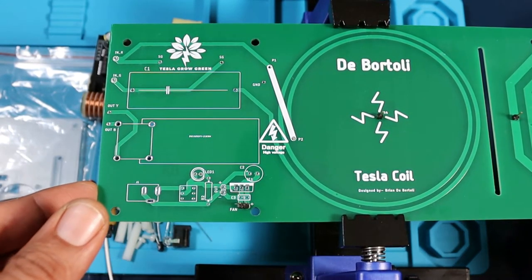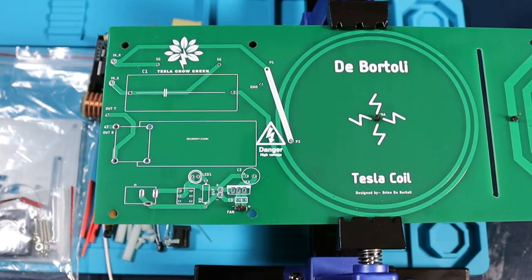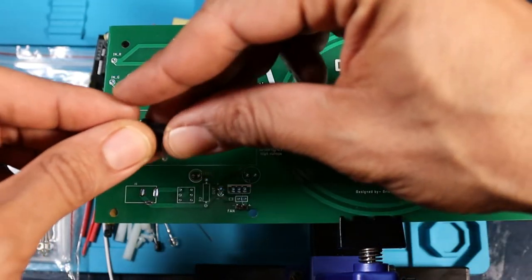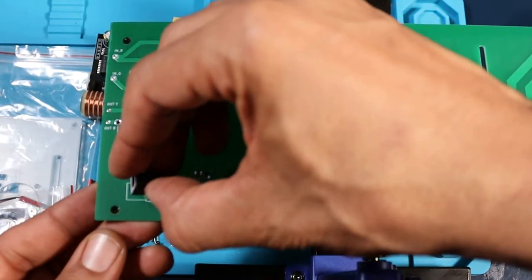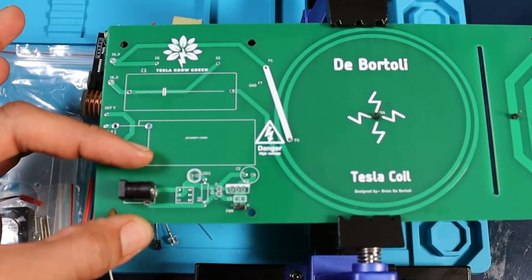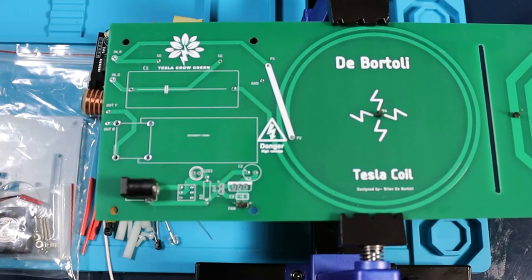Solder the 5.5 by 2.1 millimeter female DC power jack socket which is right here. This is what we're going to use to power it up. Place around the board. I like to use a bit of scotch tape over them, flip it over and solder it.